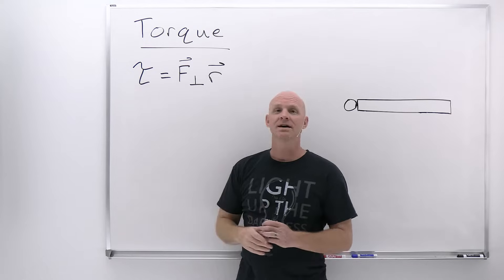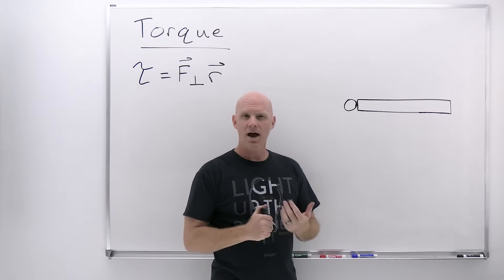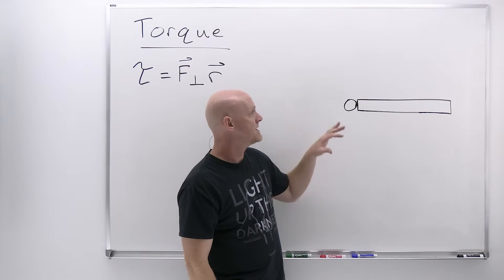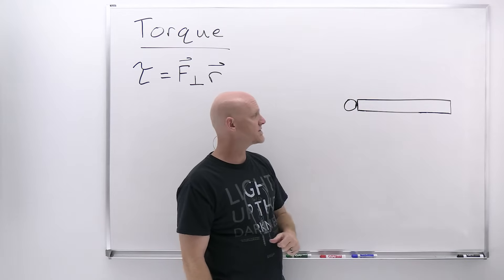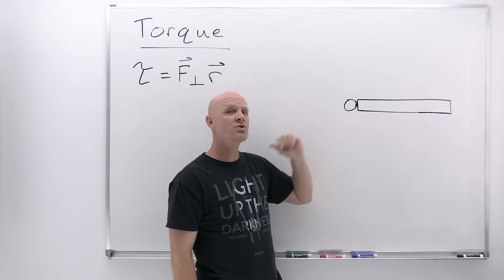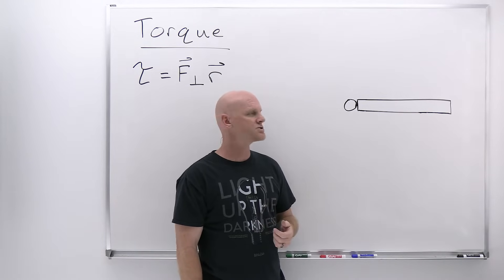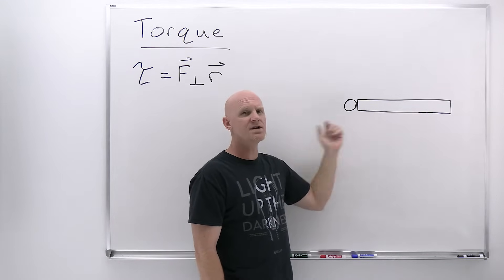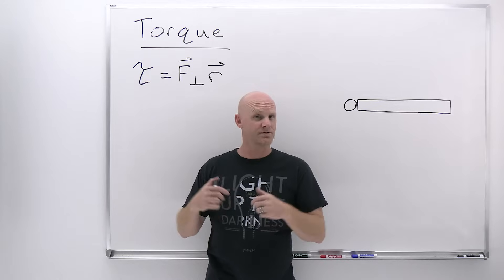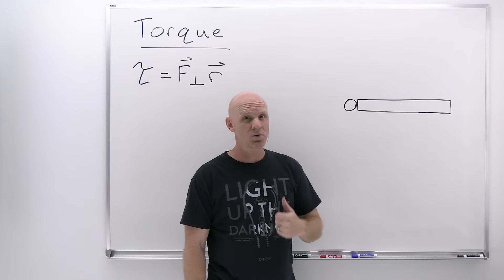It's easiest to understand how we define these terms in the context of an example. The example we're going to use is a free swinging door on a hinge, like one of those old school galley doors that you use to enter kitchens. You can usually push them open in either direction. Most of you wouldn't try to open this door by pushing right next to the wall, right next to the hinge.